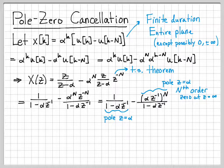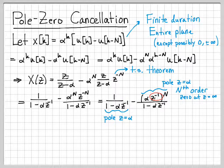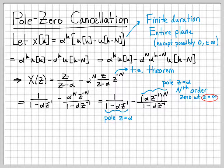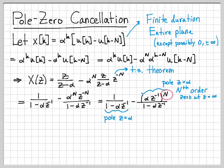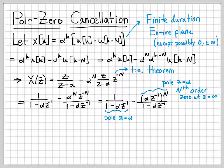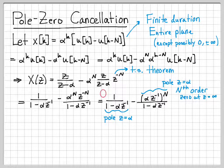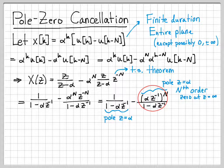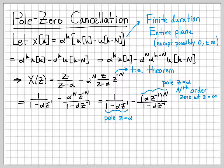But it also has an Nth order zero at z equals infinity. When z is infinity, z inverse is 1 over z, 1 over infinity is 0. So the numerator is 0 whenever z equals infinity. Since the numerator is raised to the power N, we call this an Nth order zero at infinity. So this term by itself has a pole at z equals alpha and an Nth order zero at z equals infinity.